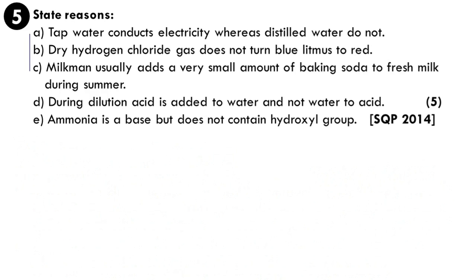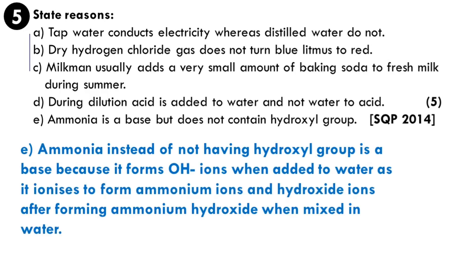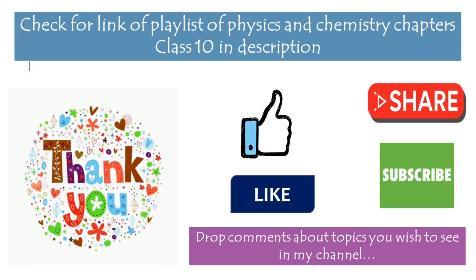Sub-question E: ammonia is a base but does not contain a hydroxyl group. Bases are substances that release OH⁻ ions in water. Ammonia is an exception — it has no hydroxyl group, but when mixed with water it forms ammonium hydroxide, which releases ammonium ions and OH⁻ ions. That is why ammonia is considered a base.